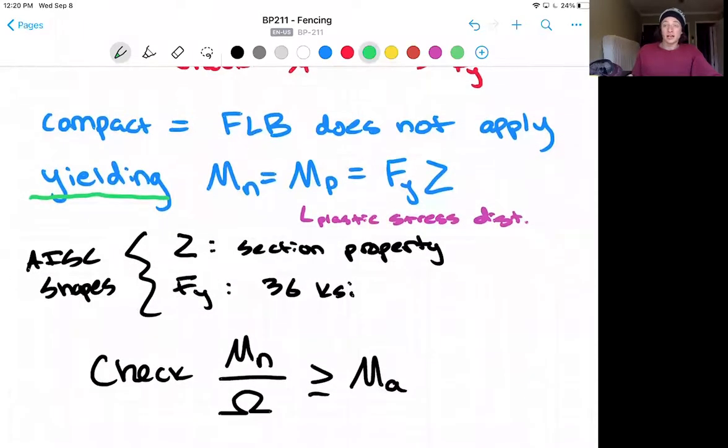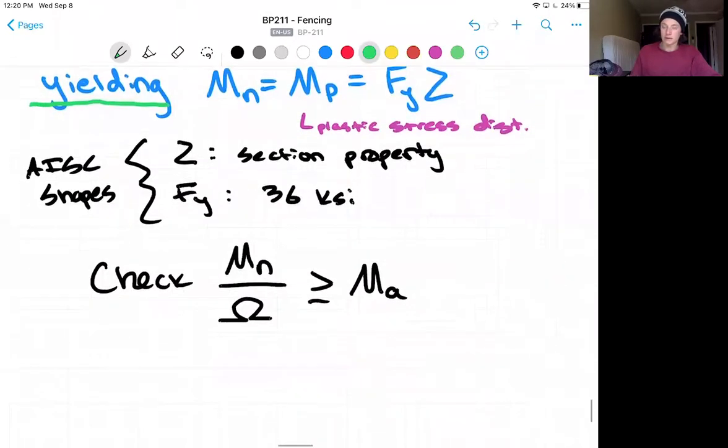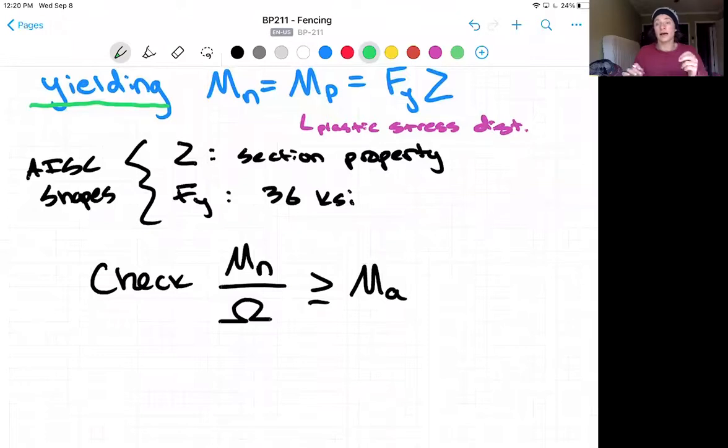And ultimately, we can check our nominal moment capacity divided by the factor of safety is greater than or equal to demand. And that will conclude how we do an analysis of the post.